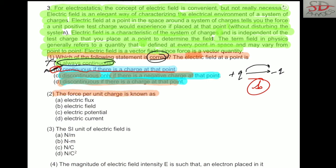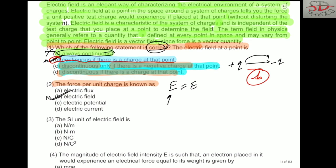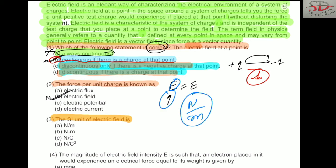Electric field is known as force per unit charge. The unit of force is Newton and the unit of charge is Coulomb, so the unit of electric field is Newton per Coulomb. Therefore, Newton per Coulomb is the correct unit.